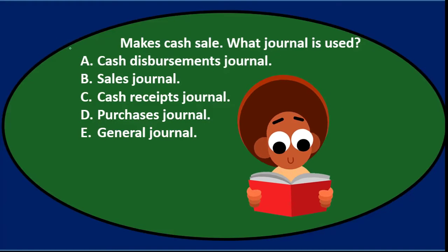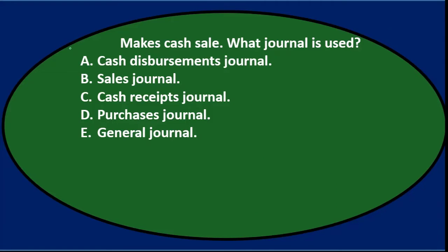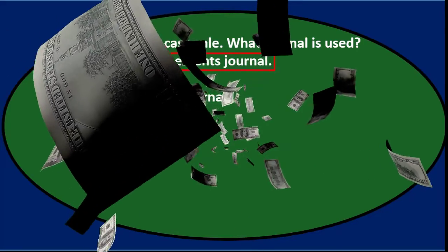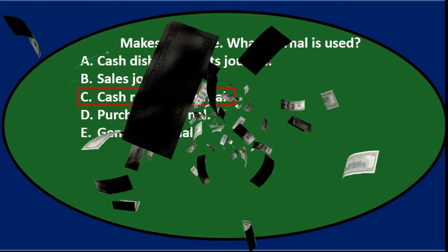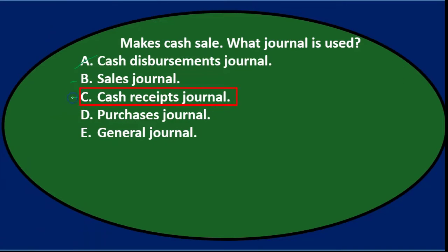Let's read through it and cross some out using the process of elimination. Makes cash sale — what journal is used? A. Cash disbursements journal — that would mean we are spending cash, and if we made a sale you would think we'd be receiving cash, so it's not going to be A. B. Sales journal — it does look like we've made a sale, so I'll keep that for now. C. Cash receipts journal — we sold something for cash and got money, so it seems like we received cash, I'll keep that. D. Purchases journal — we didn't purchase anything, we're the ones selling it, so that's not it. E. General journal — that's the default if it doesn't fit anywhere else, but we have two contenders: B and C.